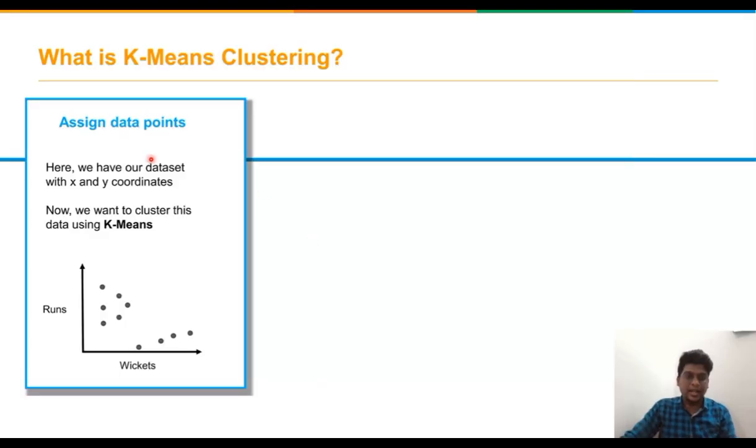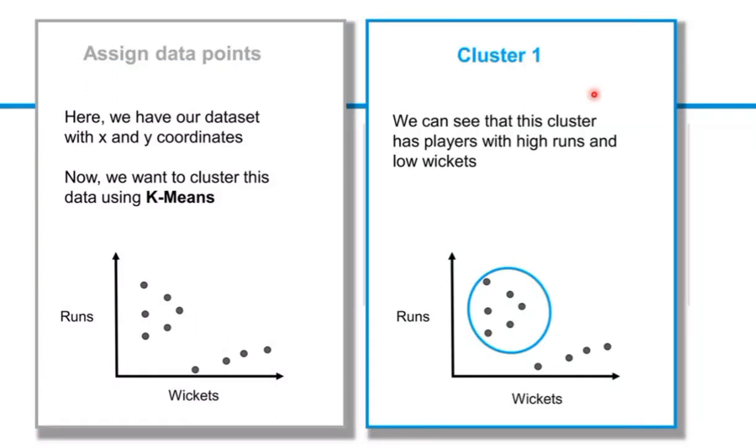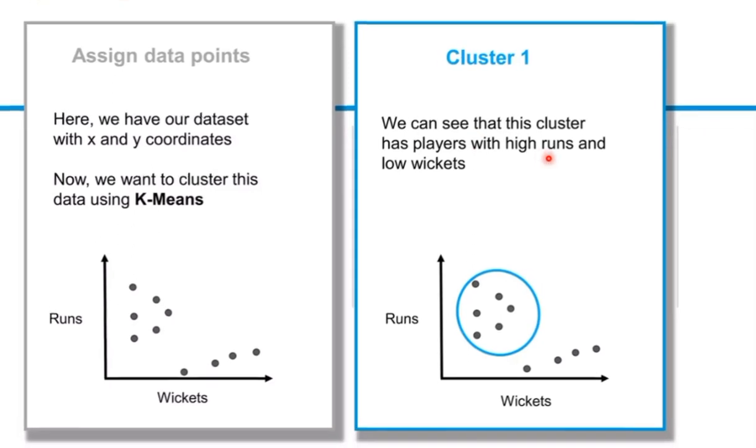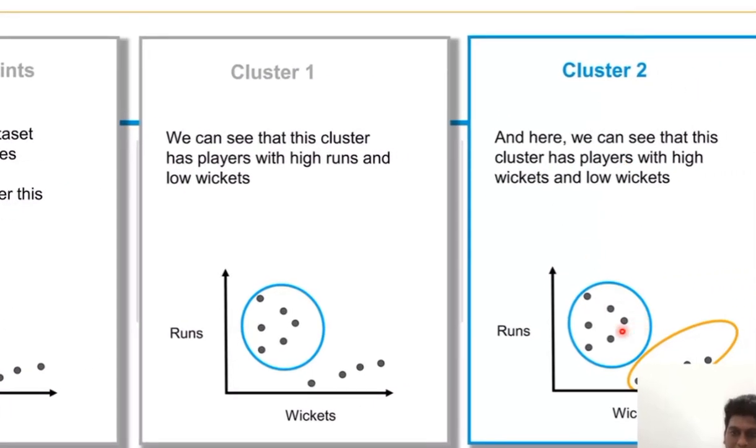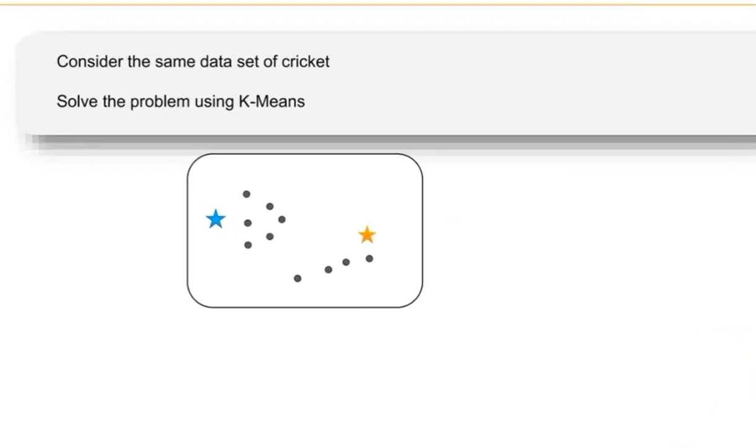We are going to assign the data points. Here in x-axis we are having wickets and in y-axis we are having runs. X and y are the coordinates here. We want to cluster the given data with the help of k-means clustering algorithm. Cluster 1 is classified with the help of most number of runs and lesser wickets. The cluster 2 is defined by a player with high wickets. We are going to solve this problem using k-means.